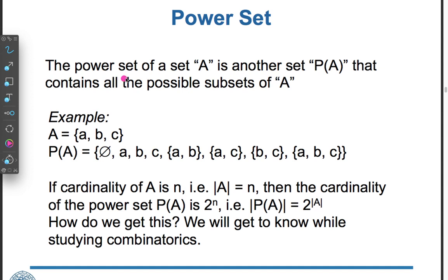Power set: The power set of a set A is another set P(A) that contains all possible subsets of A. For example, if A = {a, b, c}, then P(A) = {∅, {a}, {b}, {c}, {a,b}, {a,c}, {b,c}, {a,b,c}}. If the cardinality of A is N, then the cardinality of the power set P(A) is 2^N.